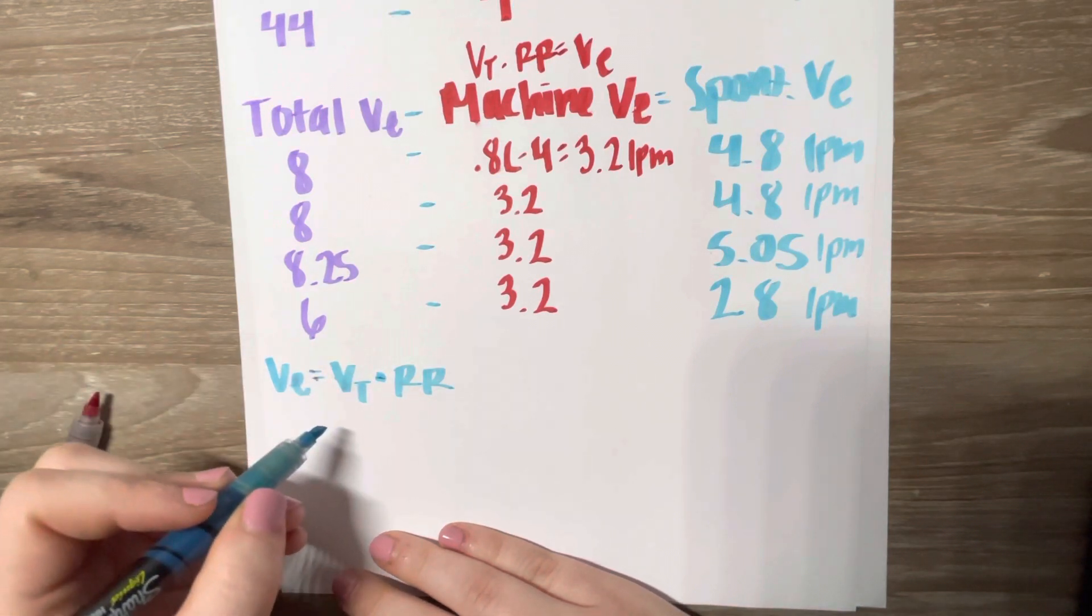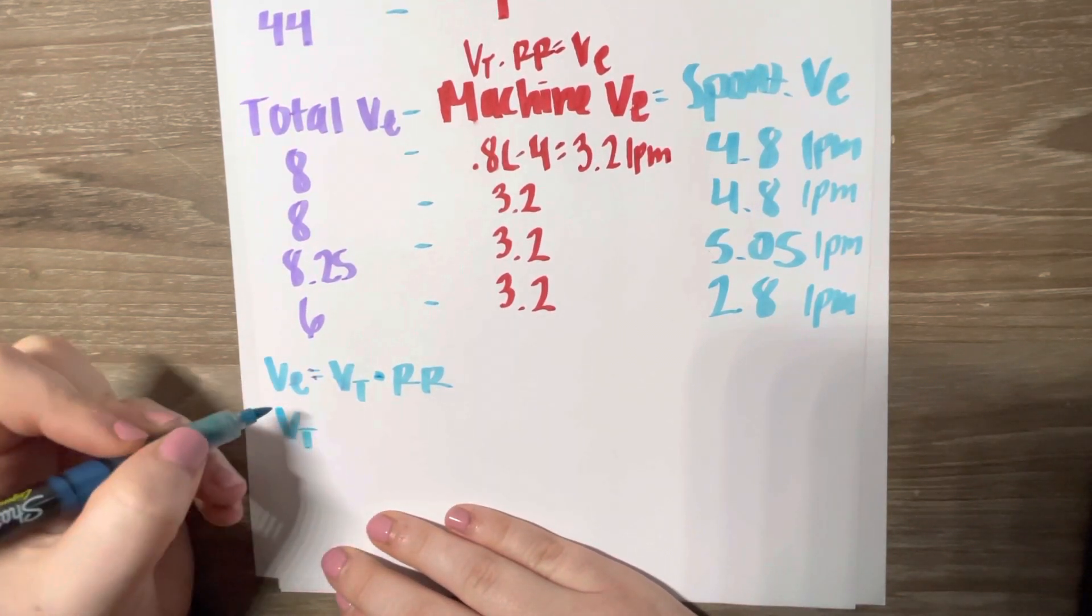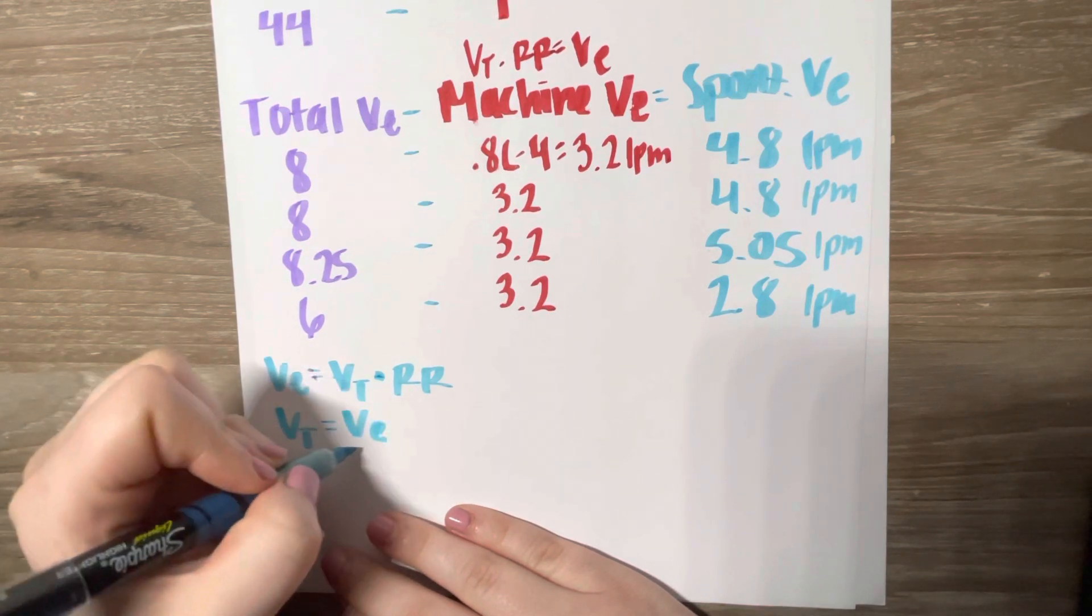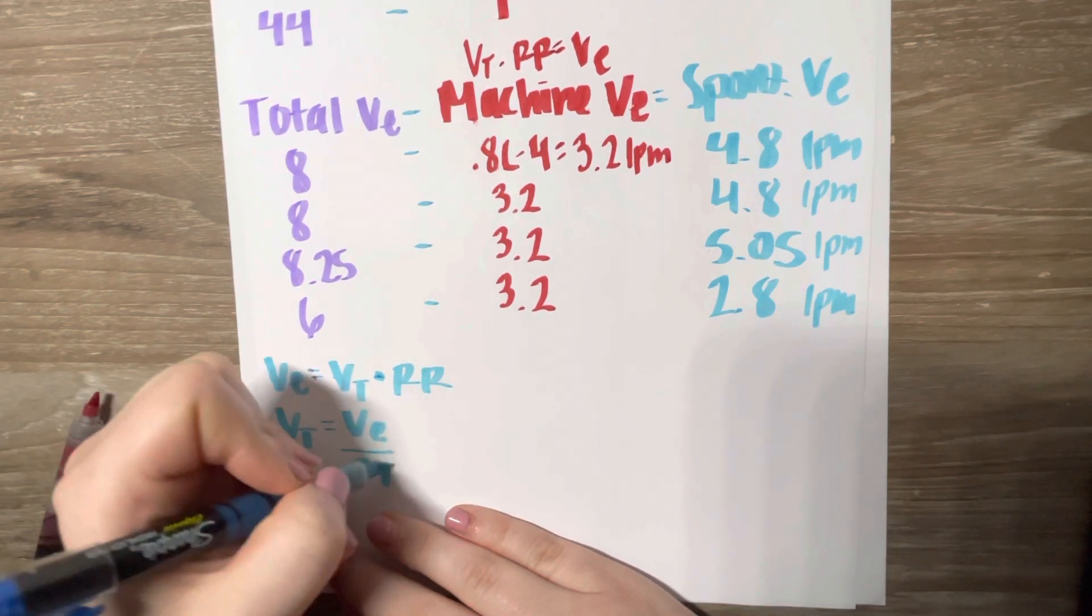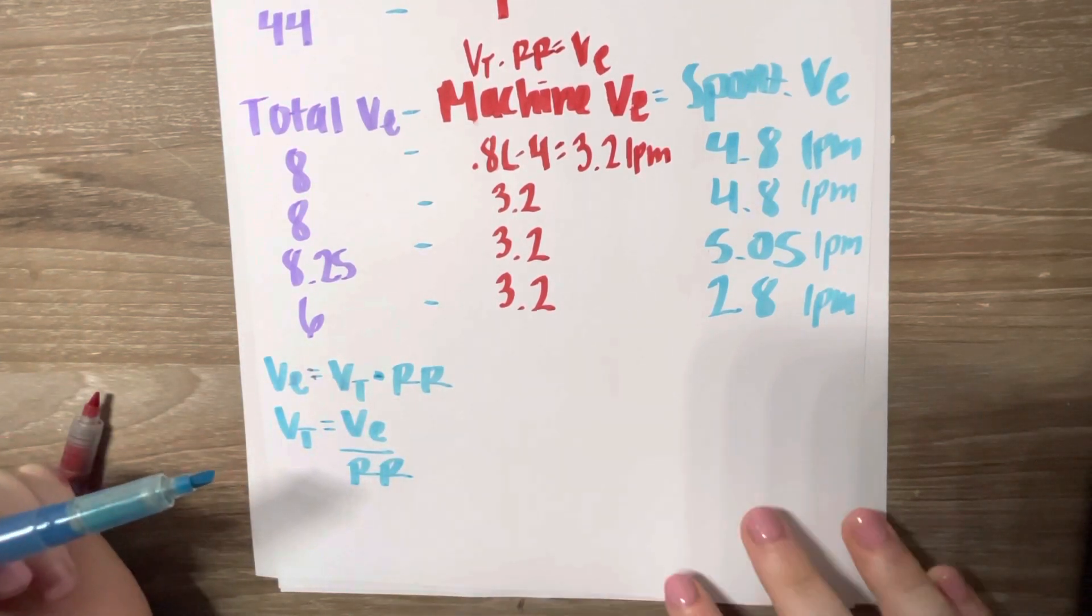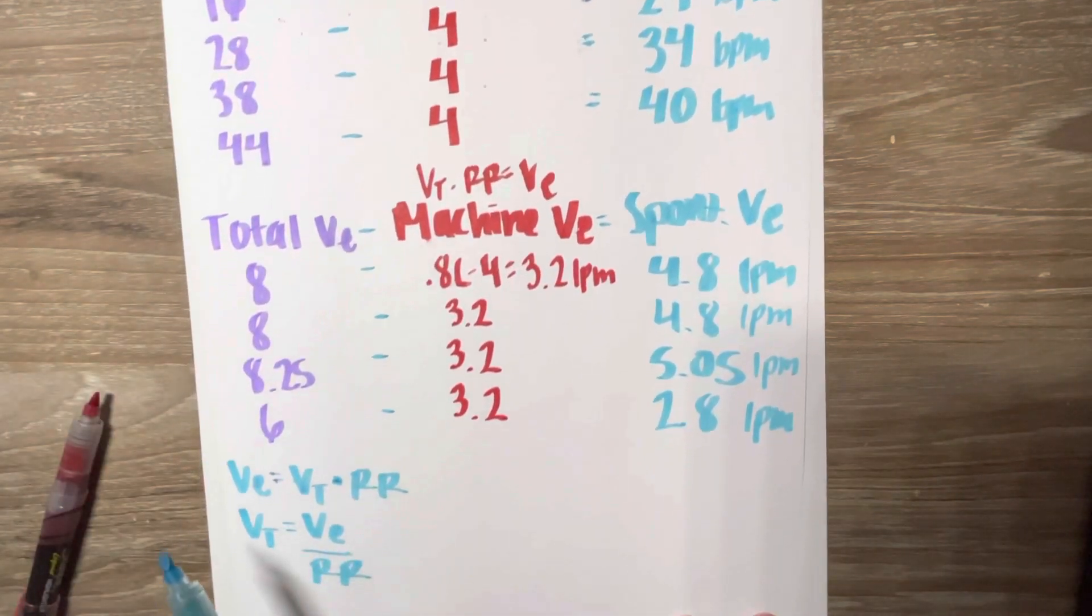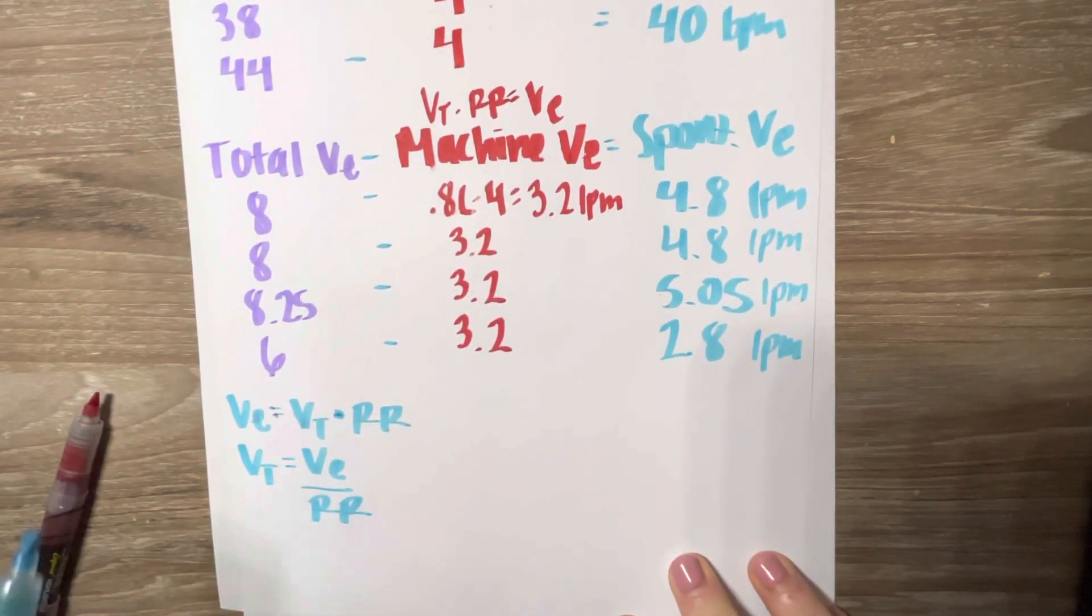And I'm just going to rearrange this formula a bit. So tidal volume will equal minute volume over the respiratory rate. So I just rearranged it. And using the values that we got here in blue, all of our spontaneous values, now we just have to plug it in this formula for each one.